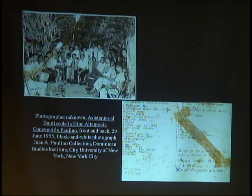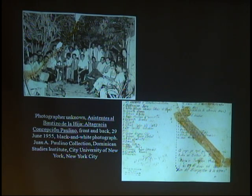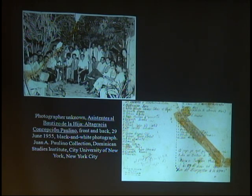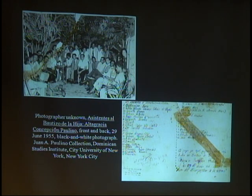The photograph Asistentes al Bautizo, with its extensive writing, also reveals another aspect of what visual studies scholar Marian Hirsch terms the familial gaze. In vernacular family photographs, there are actually multiple intersecting gazes that position the subjects — family, friends, lovers, community members — in relation to one another, and, importantly, to various other external gazes, both in the past and in the present. It is at this intersection of gazes that we participate as viewers, as we desire and impose a sense of affiliation with otherwise disparate vernacular images.